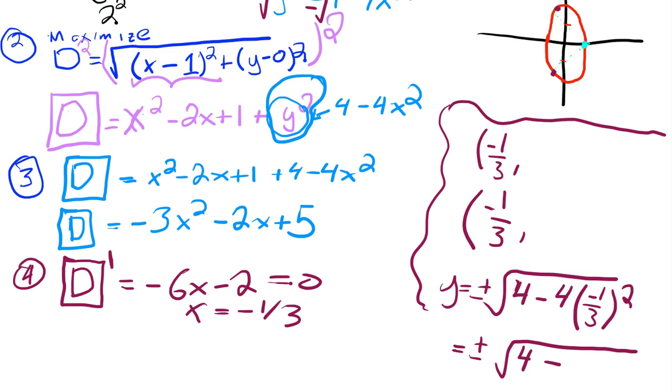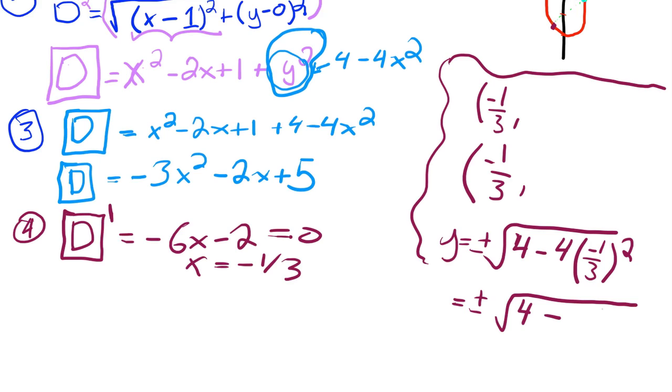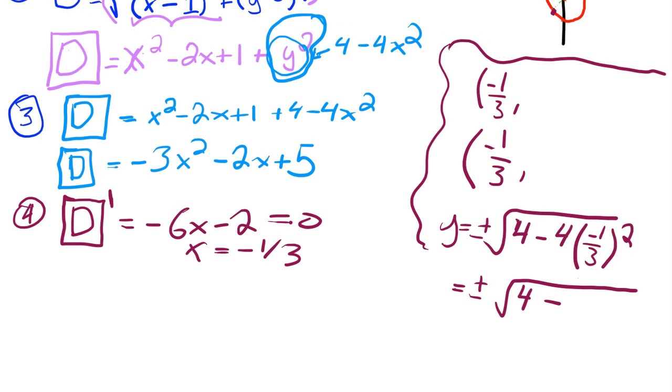So we've got 4 minus, this is going to be 4/9. And so this is 36/9 - 4/9 is 32/9. So this is the square root of 32 over 9, or the square root of 9 is 3, and then the square root of 32 over 3 and negative square root of 32 over 3.